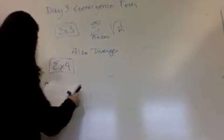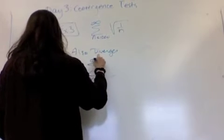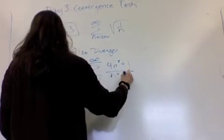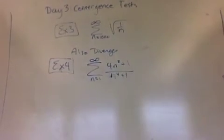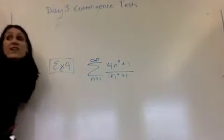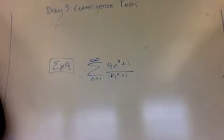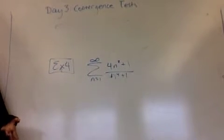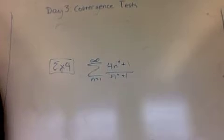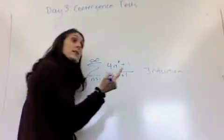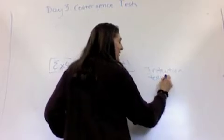Example four: n equals 1 to infinity of 4n squared plus 1 over n to the fourth plus 1. So here comes the new stuff. You guys got this? What does your intuition tell you? Converge. Very good. Intuition's not always correct in math, right? But my intuition tells me convergent.